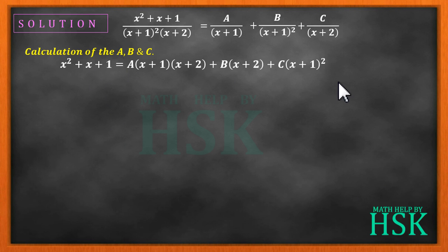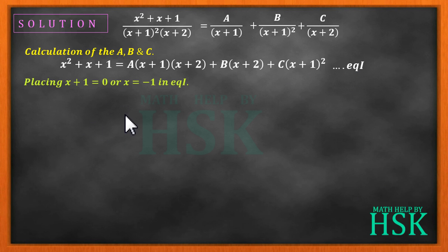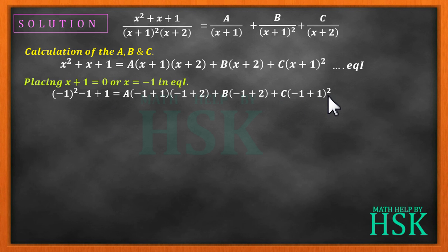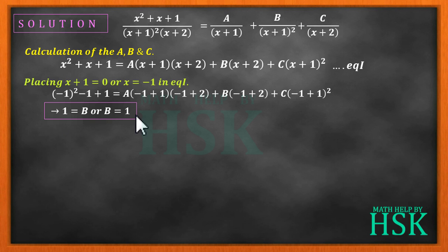To find B, place x = -1 in equation 1: (-1)² + (-1) + 1 = A·(0)·(1) + B·(1) + C·(0)². The A and C terms become 0, giving 1 = B, so B = 1.